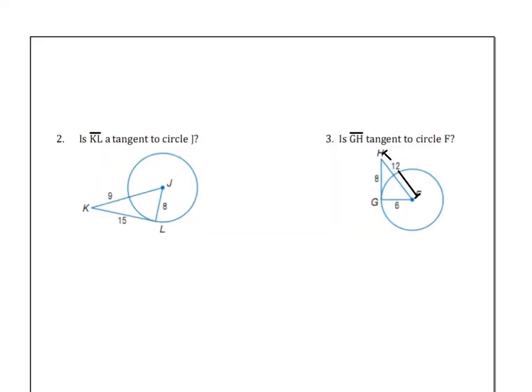Why is that important? Well, in number two, it says, is KL a tangent to circle J? Well, if it is a tangent, this would be a 90 degree angle at L. So we have to determine, is that a 90 degree angle?